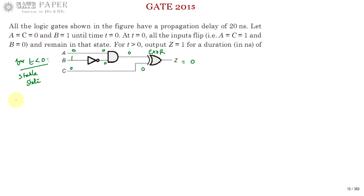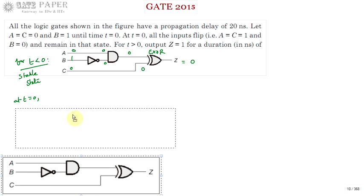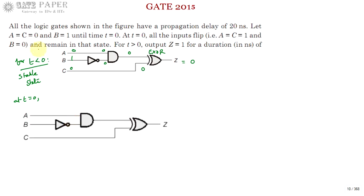Now we are going to change the inputs at t equals 0. What happens is A equals 1, B equals 0, C equals 1. For the same circuit, A has become 1, B has become 0, and C has become 1. We are going to calculate what happens to Z and how much time Z will be at logic 1. Each gate — inverter, AND gate, as well as XOR gate — all three have a propagation delay of 20 nanoseconds.